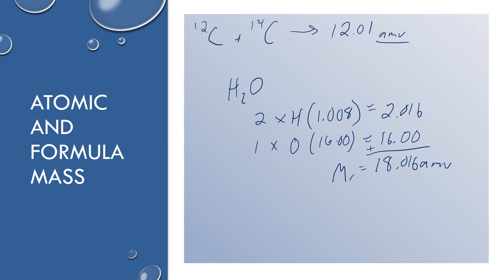If you want to be most accurate, you can use all of the digits available in the data booklet. It's rare to see people go out to the thousandths place for hydrogen — most people just round it to 1. Keep in mind that the most accurate value is going to use all of the digits available in the data booklet.